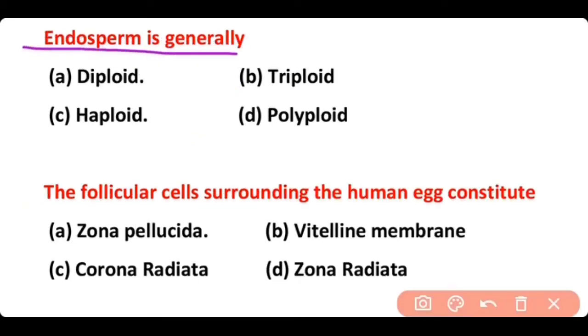Endosperm is generally: diploid, triploid, haploid, or polyploid. The correct answer is option B. Endosperm is generally triploid, present in angiosperms, but it can be haploid in the case of gymnosperms.